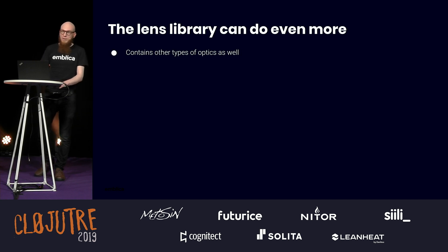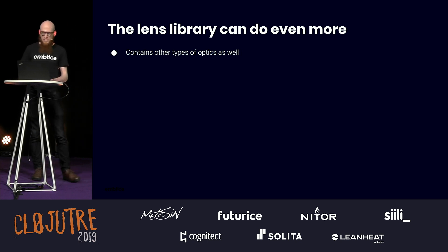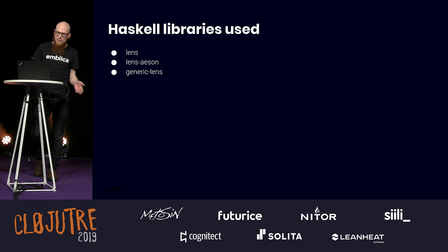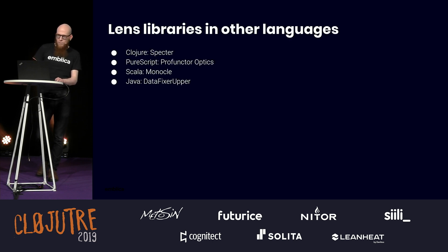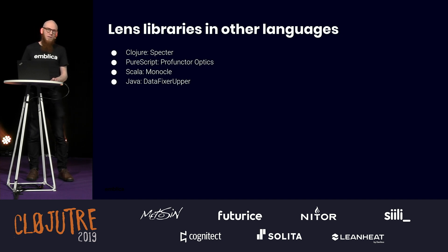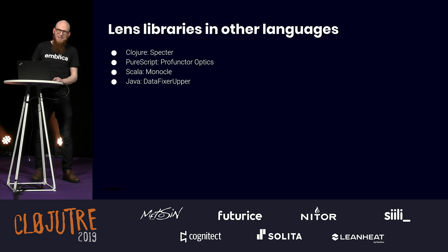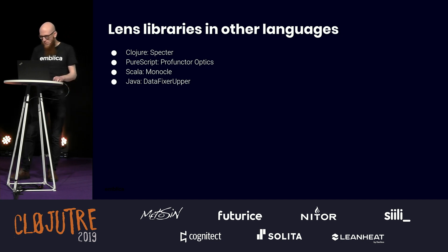This is not everything you can do with the Lens library. There are other kinds of optics inside it, but I won't talk about them today. All of these were using three Haskell libraries: Lens is the main workhorse, but the stuff for dealing with JSON was from a separate library called lens-aeson. And the field lens I used to deal with the nested records is from generic-lens. There are Lens libraries like this, or similar ones in other languages as well. There's a Clojure library called Spectre that seems to do similar things. There's a PureScript library, Profunctor Optics, very similar to the Haskell library. There's a Scala library called Monocle. There's also a Java library, DataFixerUpper, by the makers of Minecraft, Mojang. They used it to deal with all the different Minecraft version saved levels to fetch all the data that they wanted.